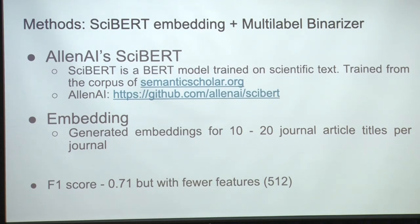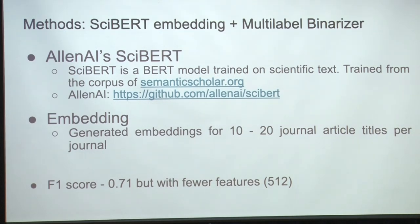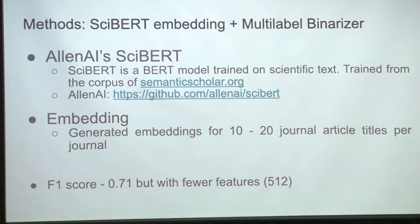I was curious to see what BERT would do. Allen AI's CYBERT is a BERT model trained on scientific text — they have a website using Spectre now that does semantic recommendation. I generated an embedding of the same journal article titles, which took about 18 hours on my laptop. Using the multi-label binarizer for subjects, I got a score of 0.71 — but with only 512 features, because that's the dimension of the language model itself. It's kind of cool that with only 512 features versus 26,000, you get the same result. But I felt this still wasn't good enough.